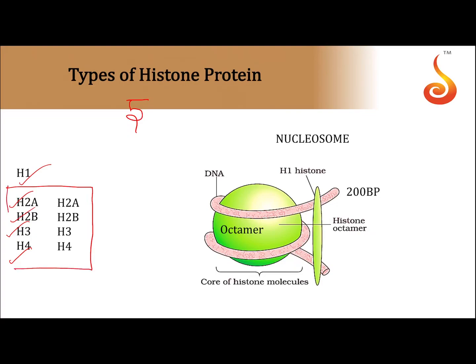Out of the five histone types, other than Histone 1, the remaining four are present in the form of pairs to form the histone octamer. The histone octamer is spherical in shape and is made up of eight histone protein subunits. It is otherwise called the core histone protein.